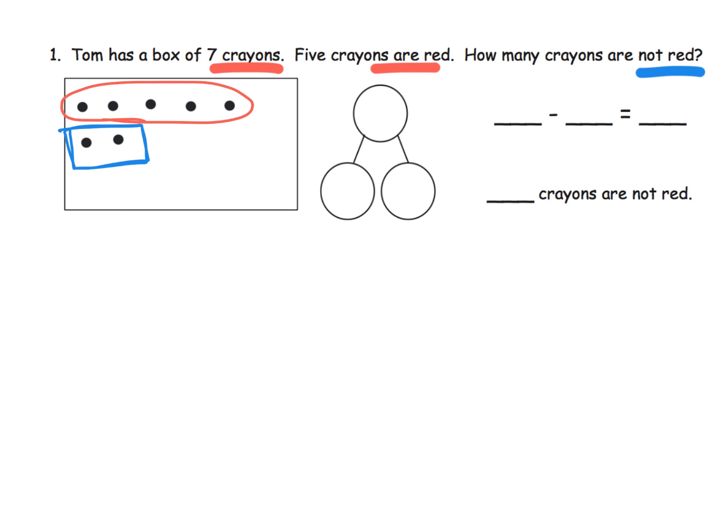The number bond would look like this. And then the number sentence, okay, I'm going to pay attention to where the equal sign is. I can see the differences over here. The subtraction expression is on this side. And so we can see that the number sentence would be seven minus five equals two.